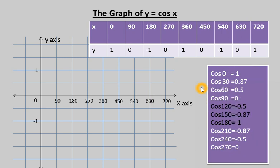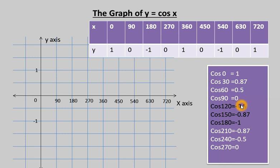Now, let's check some values. cos 0 = 1. Using a calculator: cos 30 = 0.87, cos 60 = 0.5, cos 90 = 0. So from 0° to 90°, the cosine value is decreasing from 1 to 0.